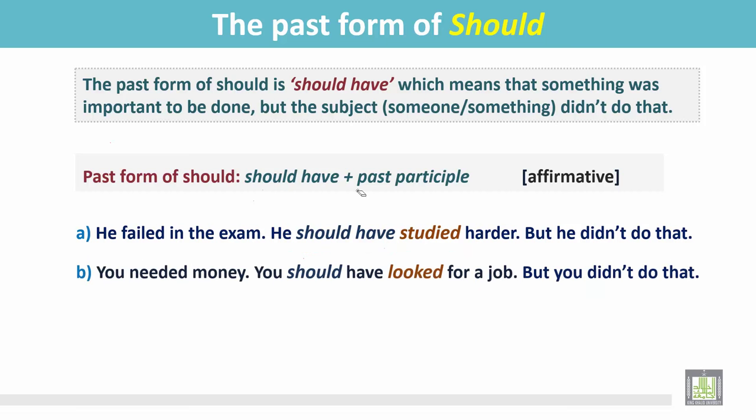You needed money. You should have looked for a job, but you didn't do that. It was very important for you to look for a job, because you needed money. You should have looked for a job. Here, should have, the past form of should, is followed by the past participle form of the present tense of the verb look.